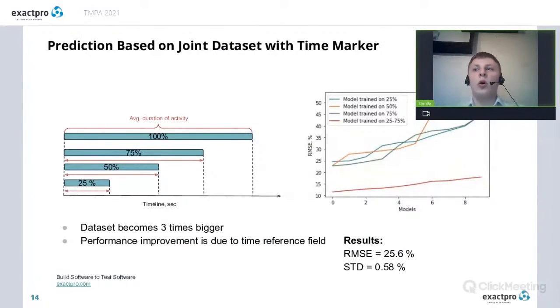After this, we wanted to check one more thing. We just joined all three above datasets into one, with one additional column, indicating at what point data was collected. After this, the model was trained using the same approach. And as we can see on this slide, the performance was significantly better. So this is the main result of our work.